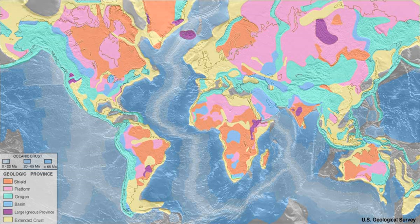Collisional orogens were produced by subduction of one continental block beneath the other continental block with the absence of arc volcanism. They are typified by the occurrence of blueschist to eclogite facies metamorphic zones, indicating high-P, low-T metamorphism at low thermal gradients.